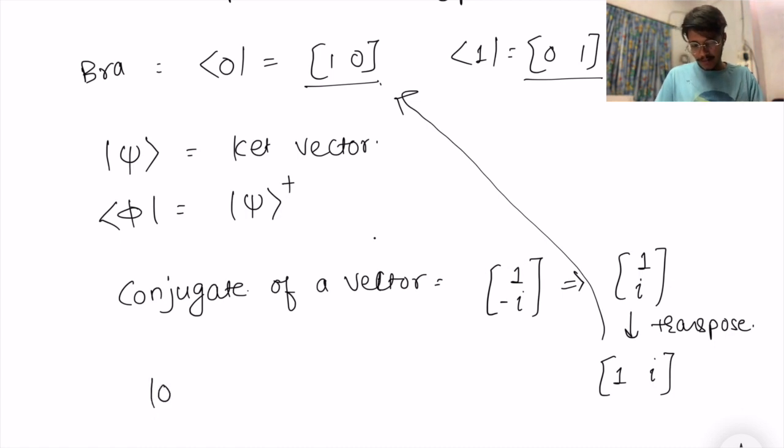For example, if you write zero as one and zero, then simply its conjugate transpose will be one and zero. Since it doesn't have any complex number, we haven't seen any particular conjugate happen into this.